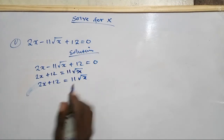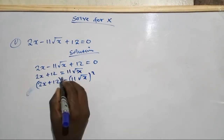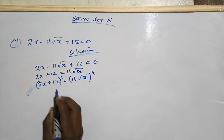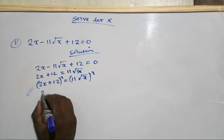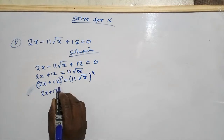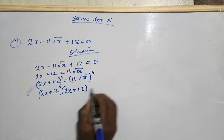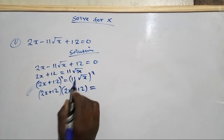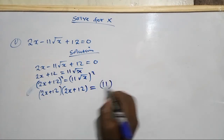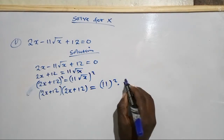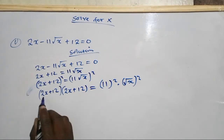What you have to do is square both sides, to eliminate the square root we are having here. So we are going to square both sides: (2x + 12) times (2x + 12) equals 11 squared times root x squared.